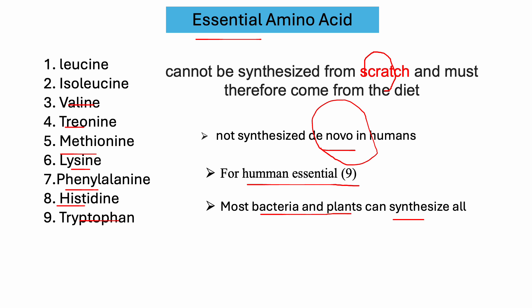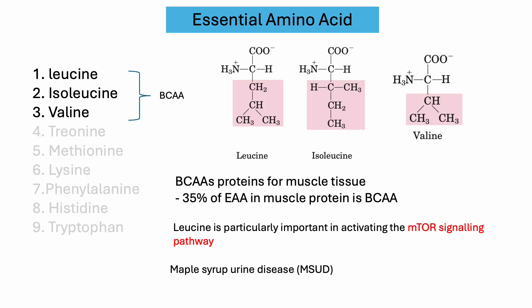Leucine, isoleucine, and valine — these three essential amino acids are also known as branched-chain amino acids. They are known as branched-chain amino acids because if we look closely at their structure, we can see that their carbon is attached to two or more other carbons to make a branch, which is a unique character. These branched-chain amino acids contribute to the protein synthesis of muscle tissue and are also responsible for the repairing of these tissues.